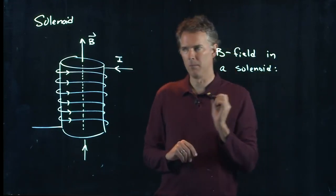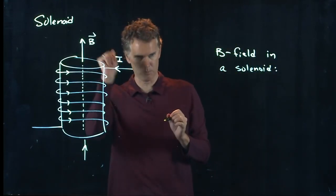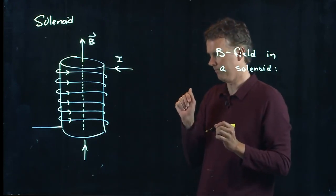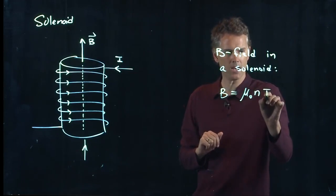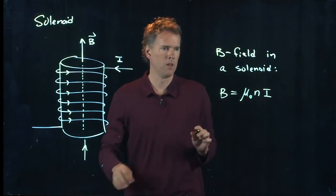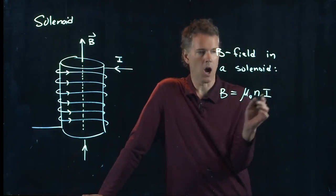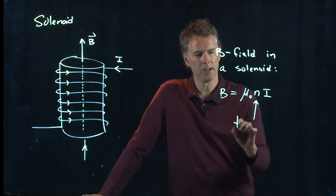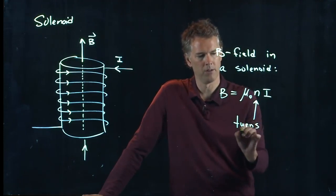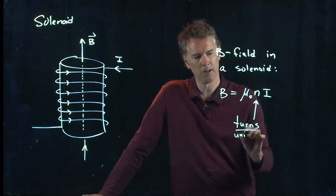Okay, the B field is pointing up, we determine that from our right-hand rule. The strength is the following: it's μ₀ and I. μ₀ we know, I we know, but what is this thing right here? This is the turns per unit length.